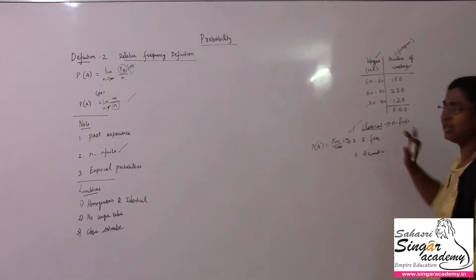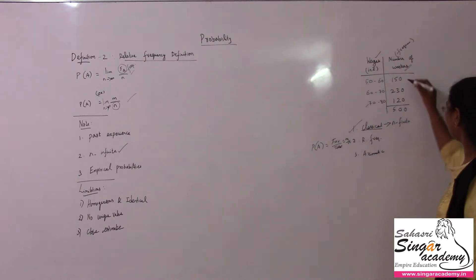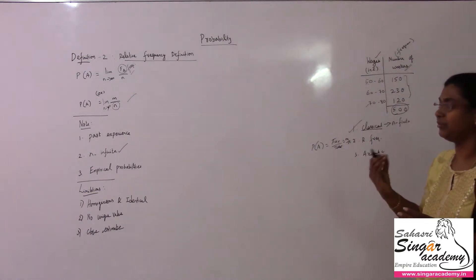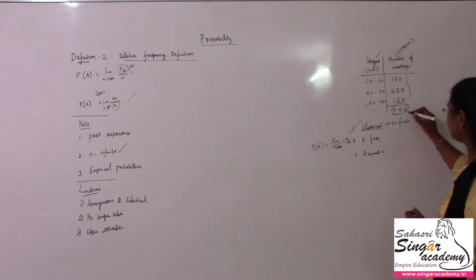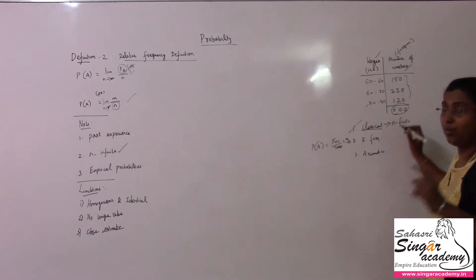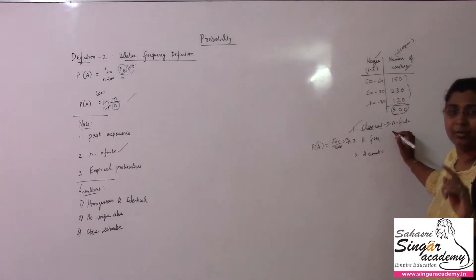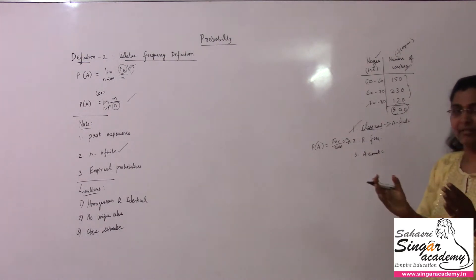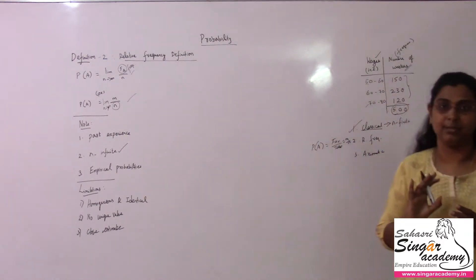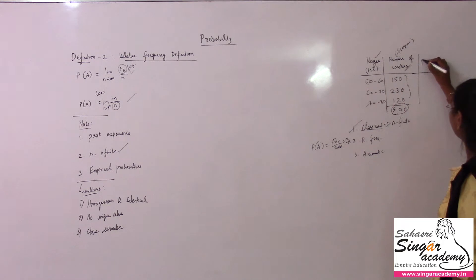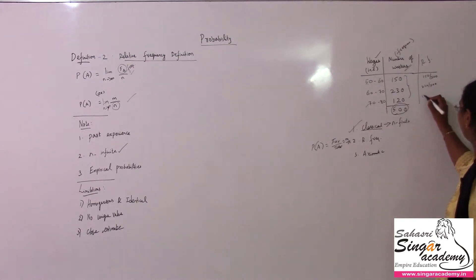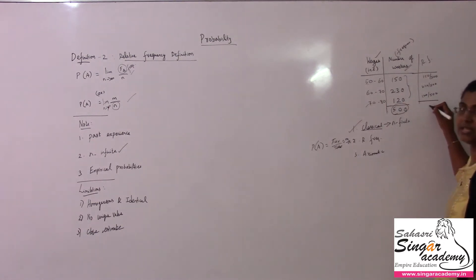So here it is about the number of workers, which is nothing but the frequency. 150 workers lie in the 50 to 60 category. If we are discussing a total of 500 workers, this is the frequency distribution. In the frequency distribution, the total is 500. In probability, we distribute one — so we use relative frequency distribution. The relative frequencies are: 150 divided by 500, 230 divided by 500, 120 divided by 500. If we add all the values, this total will be 1.